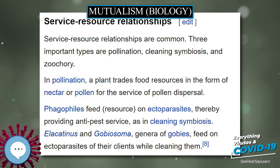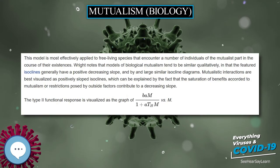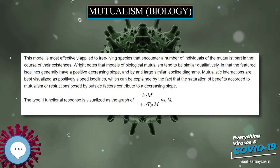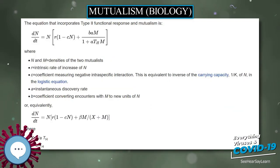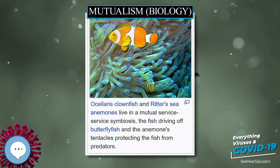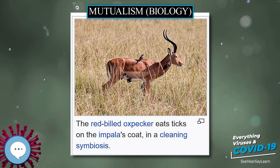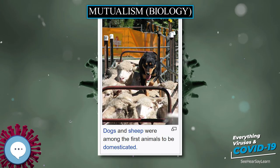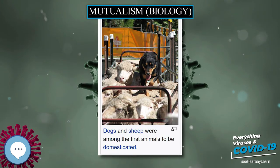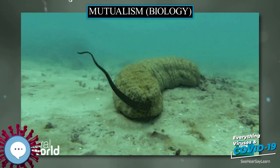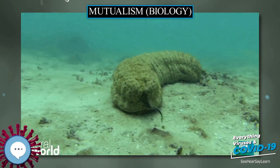Type II Functional Response. In 1989, David Hamilton Wright modified the Lotka-Volterra equations by adding a new term, beta-mk, to represent a mutualistic relationship. Wright also considered the concept of saturation, which means that with higher densities, there are decreasing benefits of further increases of the mutualist population. Without saturation, species densities would increase indefinitely. Because that isn't possible due to environmental constraints and carrying capacity, a model that includes saturation would be more accurate.